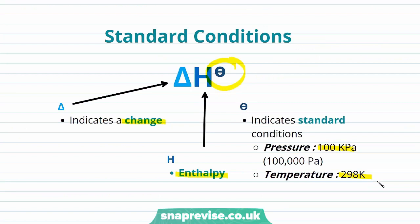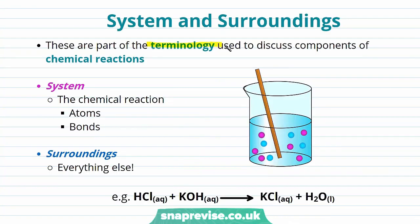Let's take a closer look at the system and the surroundings — terminology used to discuss components of chemical reactions. The system is the atoms and bonds involved in the chemical reaction, whereas the surroundings are everything else. For example, when hydrochloric acid reacts with potassium hydroxide to form potassium chloride and water in an aqueous environment, the system is all the atoms and bonds, whereas the surroundings are the aqueous solution and everything else.